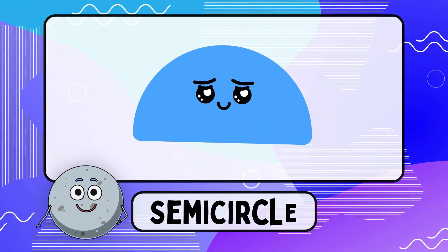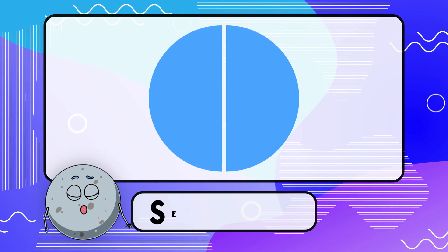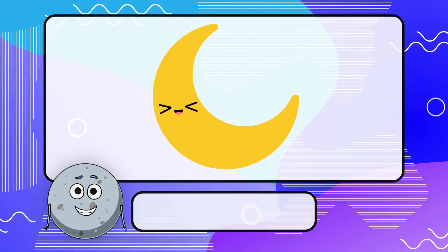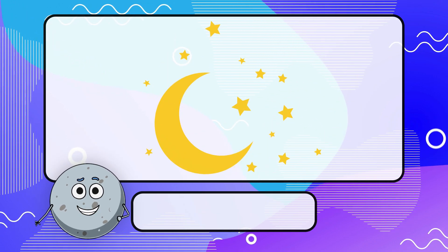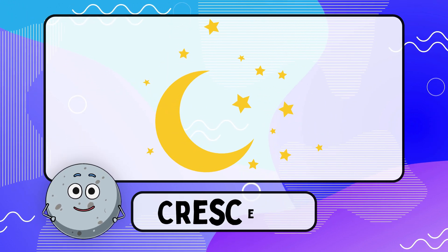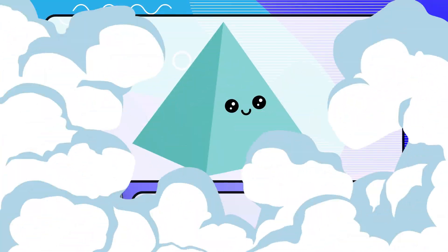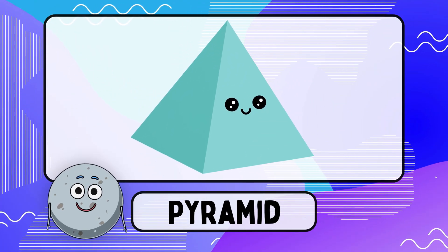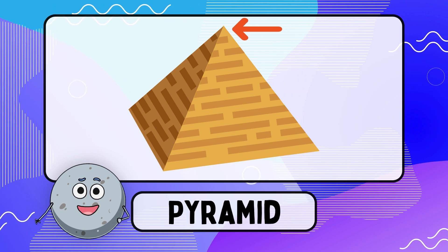Semicircle — the semicircle is half of a circle. Crescent — the crescent shape is like a moon. Pyramid — the pyramid has a point at the top.